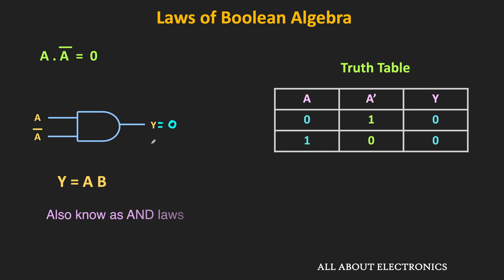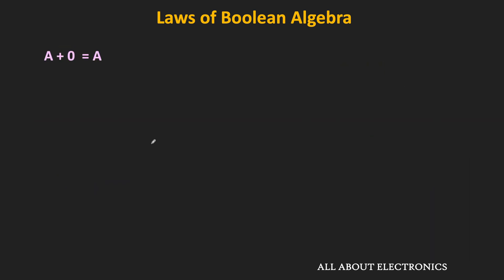Those were some of the Boolean laws related to the AND operation. Similarly, let us see the Boolean laws related to the OR operation. The first is a + 0 = a, meaning the OR operation of a and logic 0 is equal to a. This expression is quite similar to normal algebra.